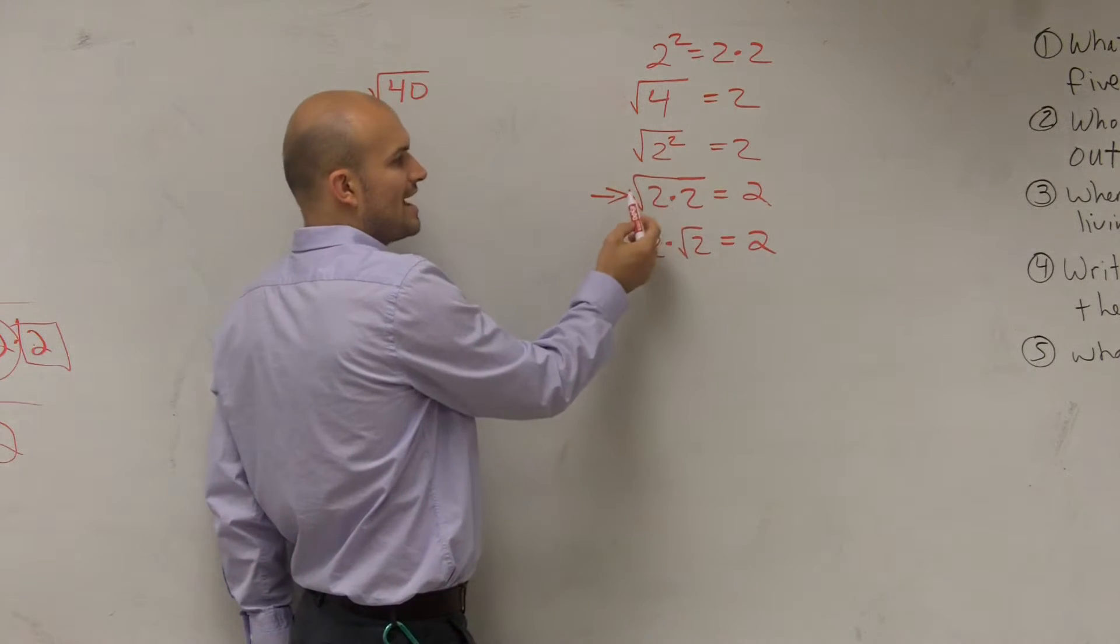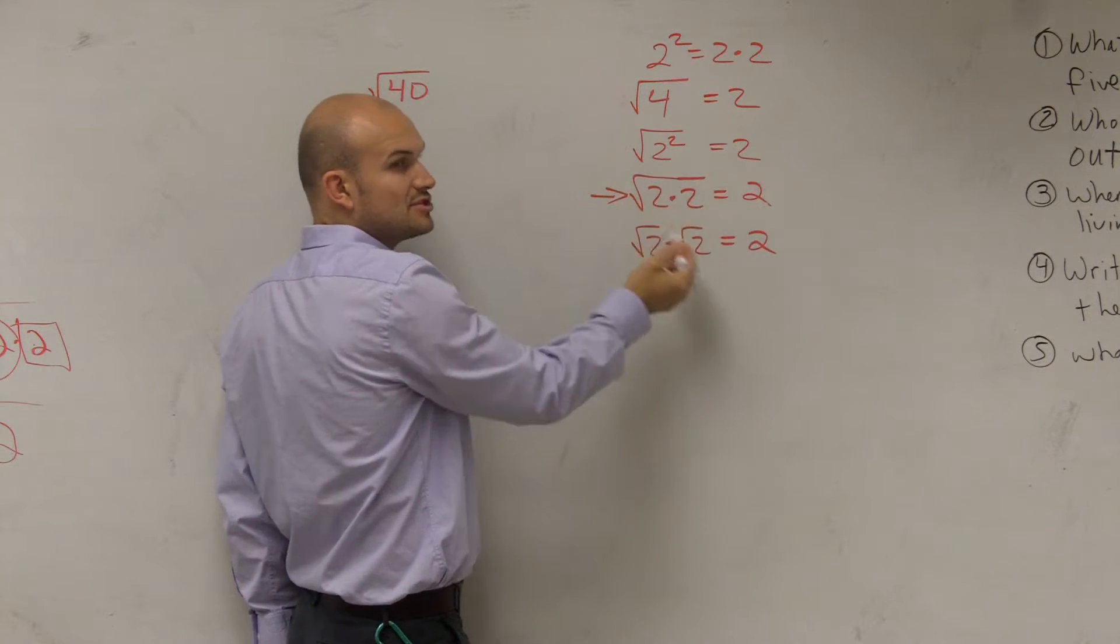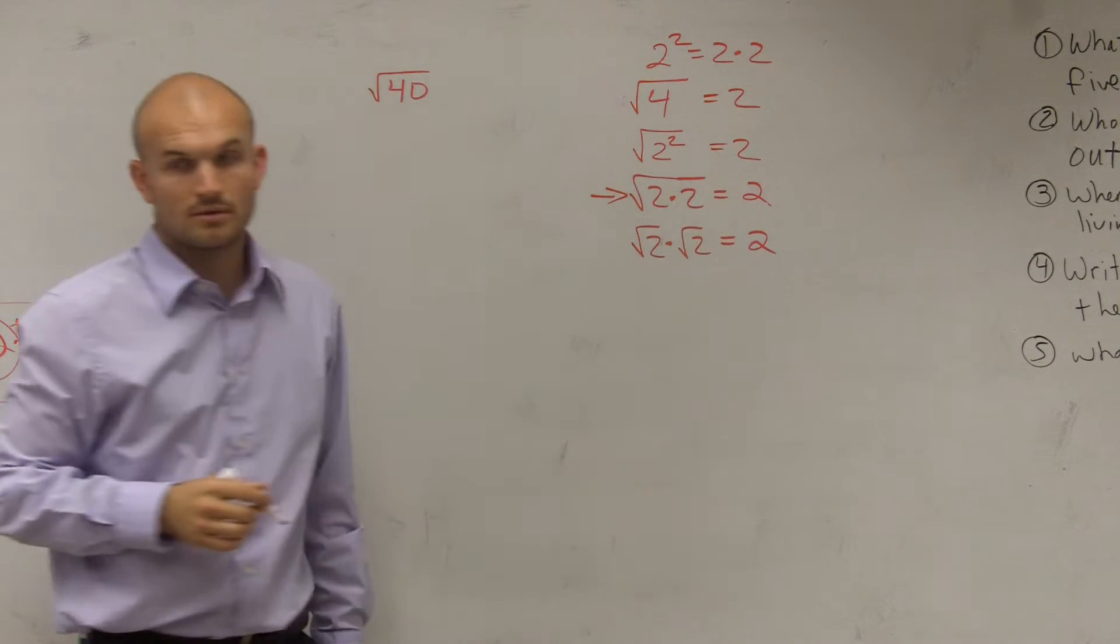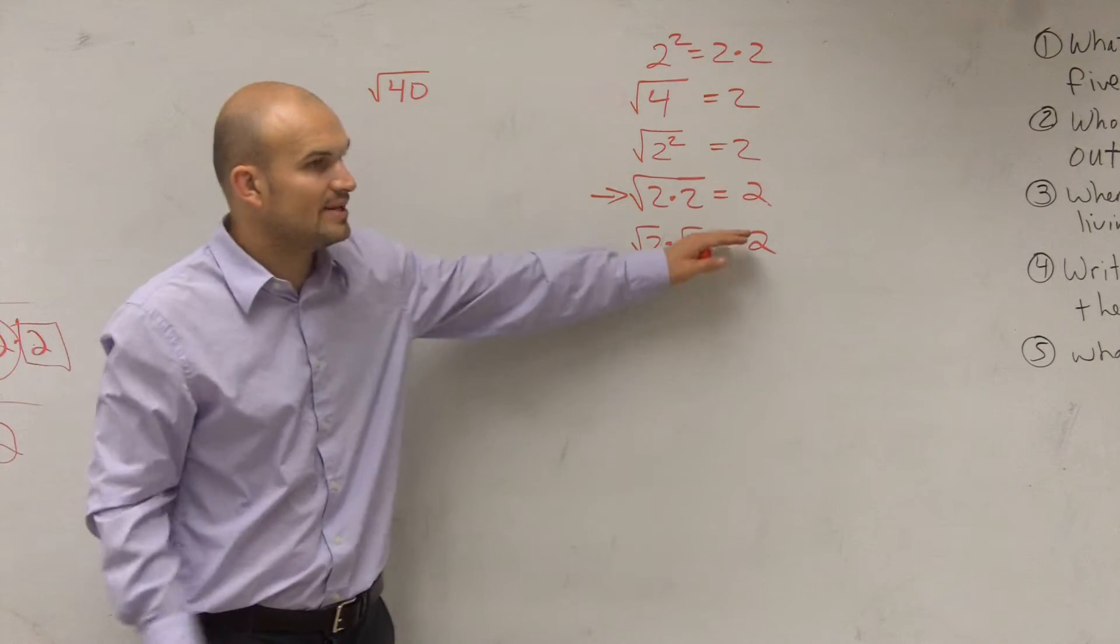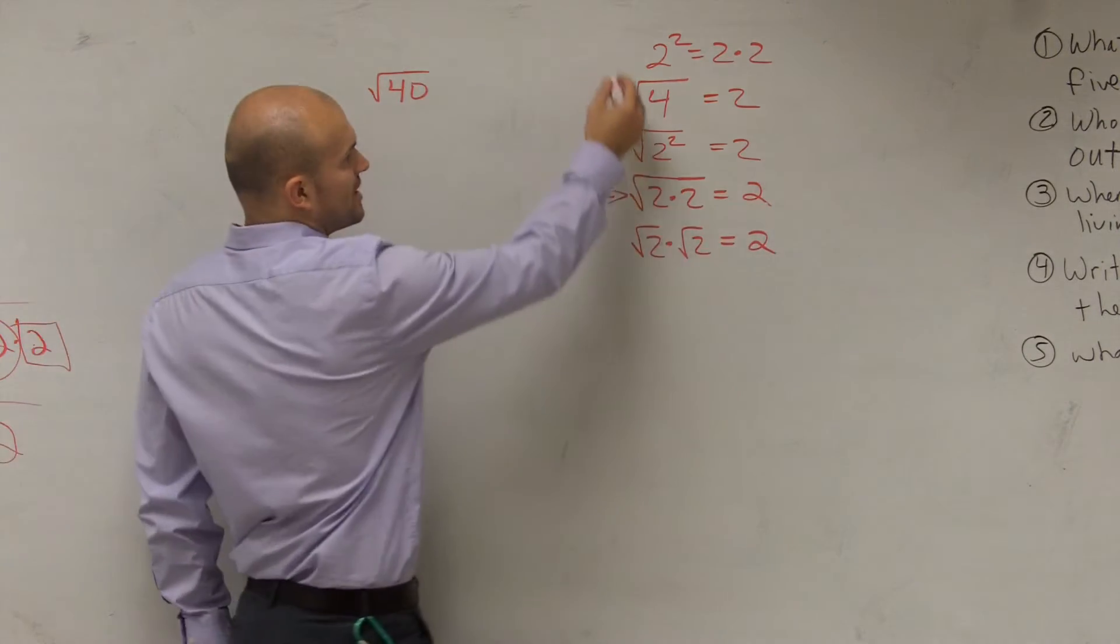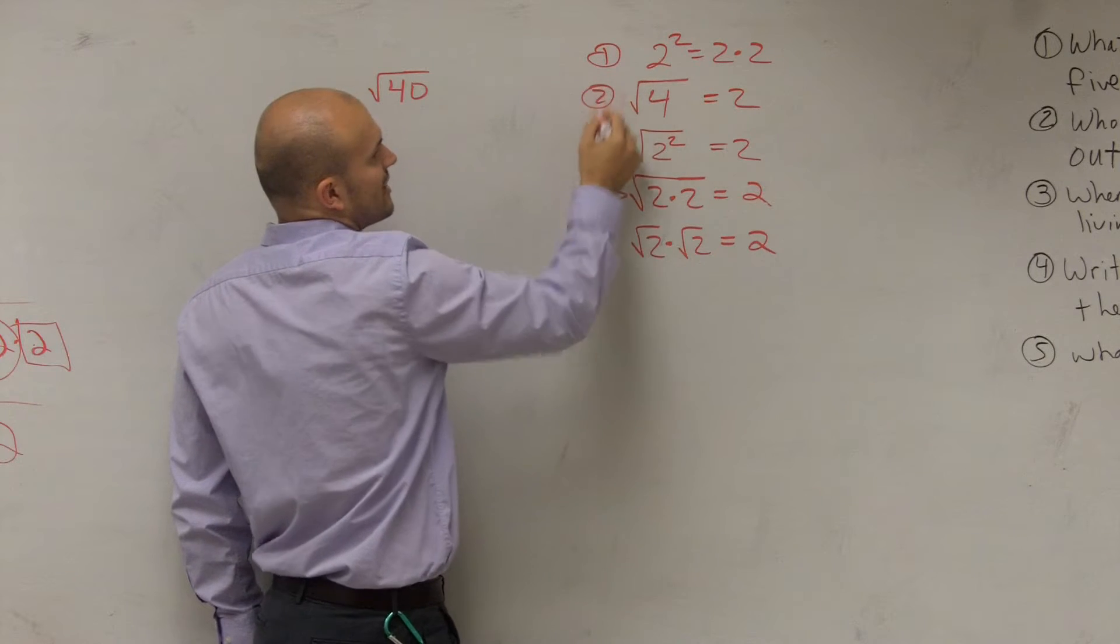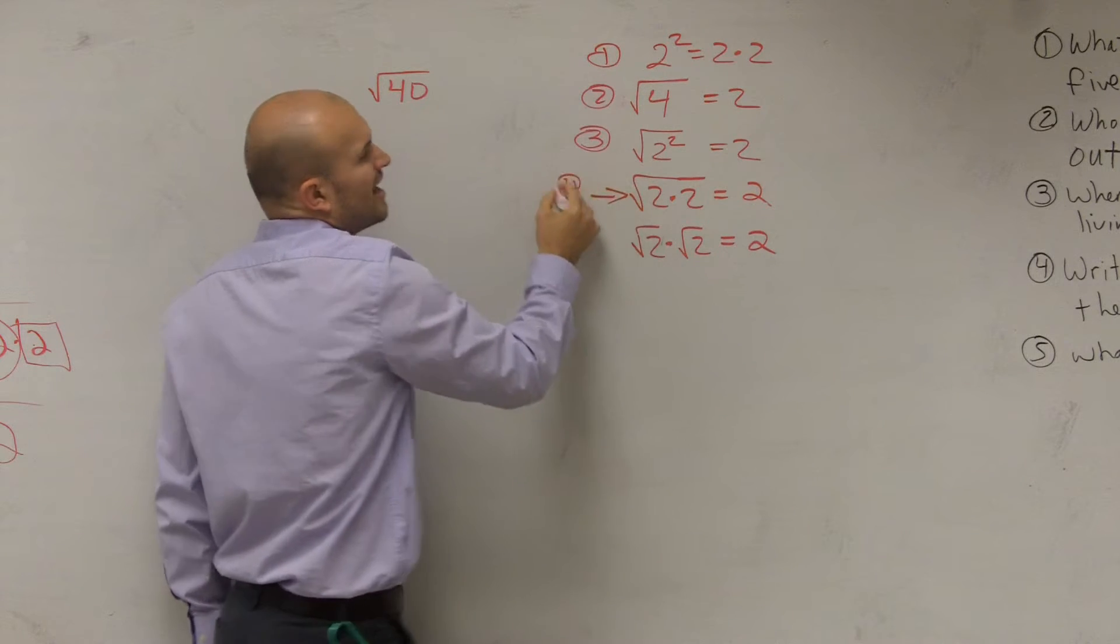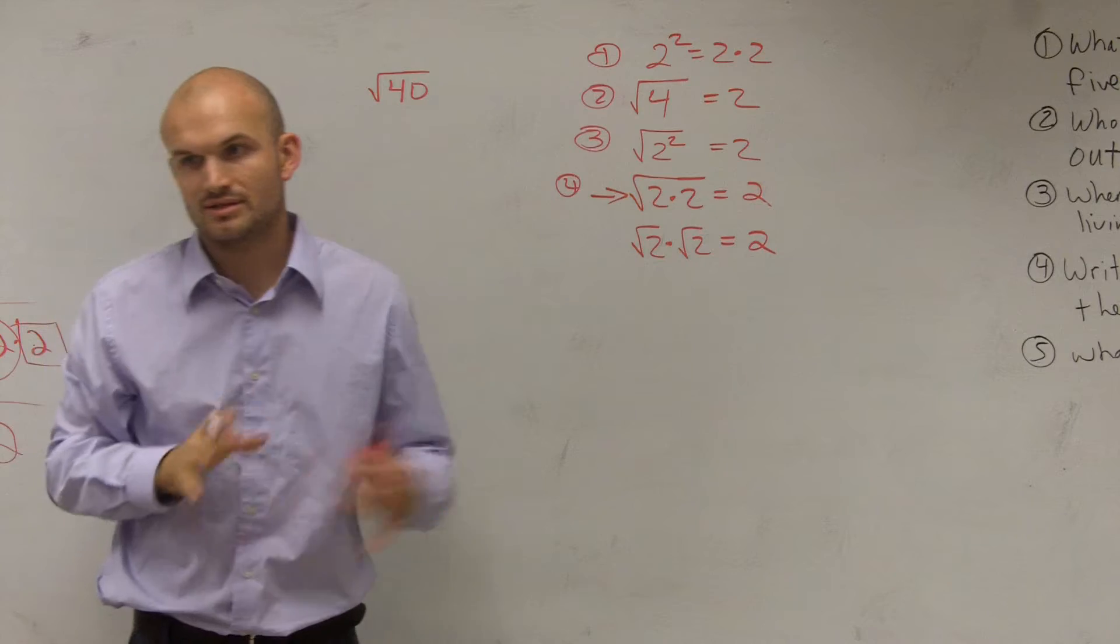Then we also need to know that I can rewrite it as the square root of 2 times 2 equals 2. And then lastly, we need to understand this. So we need to agree upon all of these traits. I'm going to continue on, but I really don't need you to just keep on adding it.